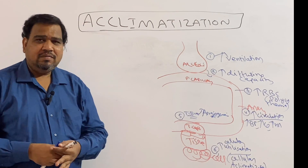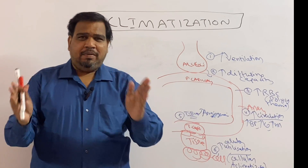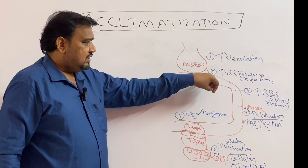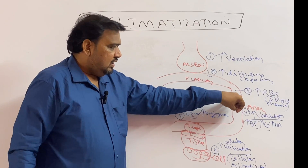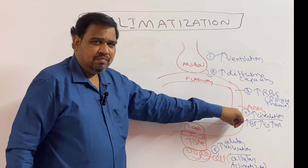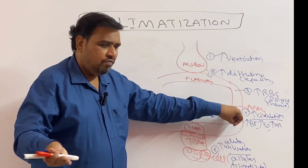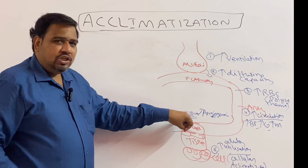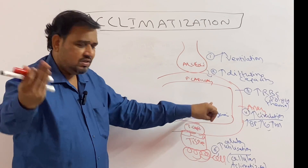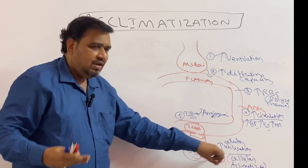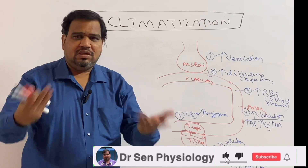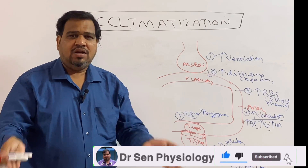So six points to summarize: increase in ventilation, increase in diffusion capacity, increased RBC production which is polycythemia, increased circulatory system including increased blood pressure and blood flow, increased tissue vascularity through angiogenesis and formation of new blood vessels, and at the cellular level, increase in utilization of oxygen by the cells — cellular acclimatization.